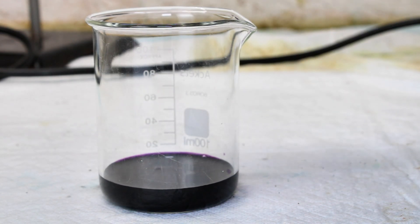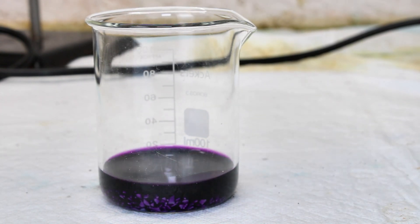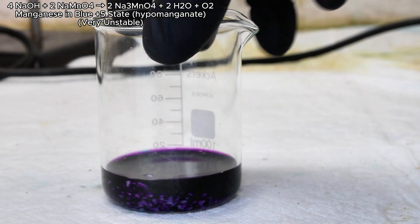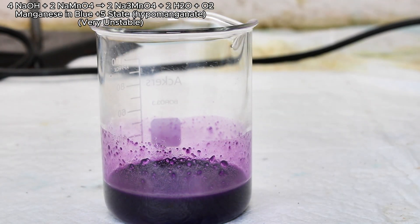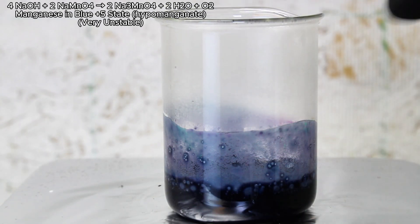When permanganate is mixed with a large excess of hydroxide, it's actually reduced to hypomanganate, which represents manganese in its plus five state. This is one of the rare examples of hydroxide acting as a reducing agent, and it's only possible because permanganate is such a strong oxidizer.